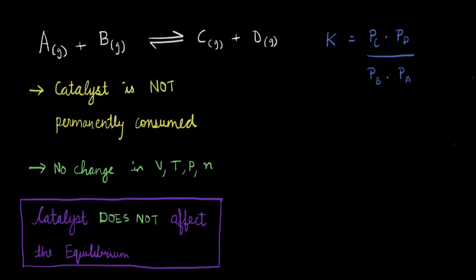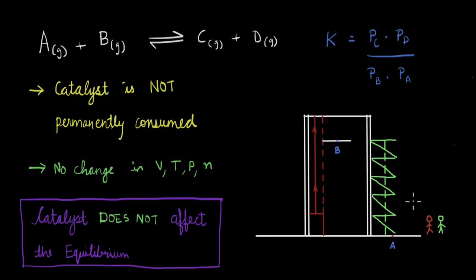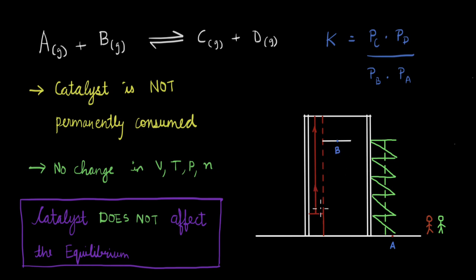A simple way to understand this difference is to think of this example. Let's say you and your friend are on the ground floor of a building, and both of you want to get to the top floor, marked by point B. One of you takes the staircase while the other takes the lift. Taking the lift is faster — whoever takes it will get to point B quickly. But the top floor is not going to change depending on whether you take the lift or the stairs. Both of you end up at the same point; it's just that taking the lift gets you faster from A to B. That is what adding a catalyst does — it takes you faster to the destination, but the destination itself does not change.